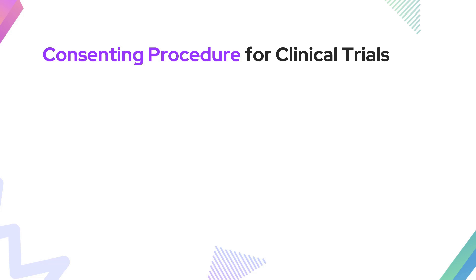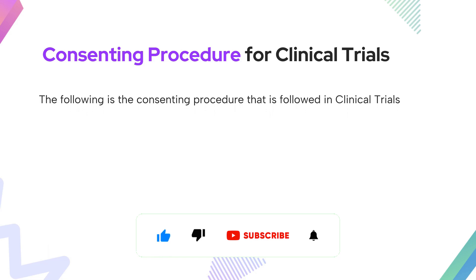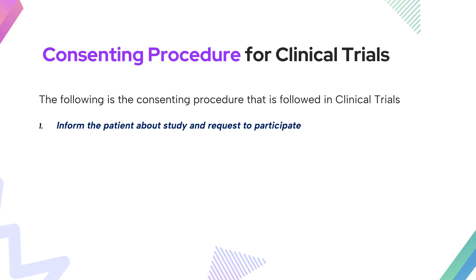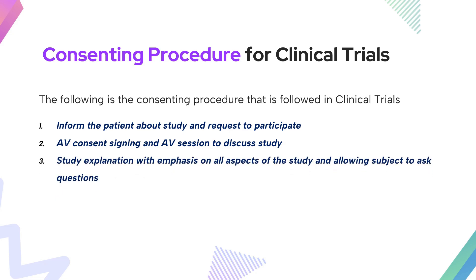Now let us understand how exactly the consenting procedure occurs in clinical trials. Whenever a trial is available, the principal investigator informs the subject that a clinical trial exists and their medical condition aligns with the inclusion criteria, and asks if they would be interested in hearing about the trial — an appointment is then booked. The subject is then informed about the study and the PI requests participation in the consenting procedure. In India, an audio-visual consent is required, where in front of a camera the PI takes and explains consent. Before the AV session begins, the subject must sign the audio-visual consent form first.